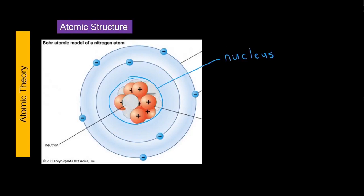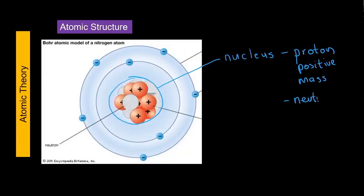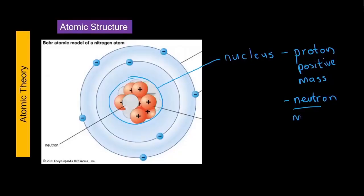Inside the nucleus we have subatomic particles. We have the proton, which is a positively charged particle — it is positive and it has mass. In the nucleus we also have the neutron. The word neutron comes from neutral, which tells us what it is. A neutron is a neutral subatomic particle found in the nucleus. It has no charge, but it does have mass — the same amount of mass as a proton. This has an implication for us that we will come to in a few slides' time.